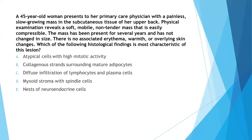Which of the following histological findings is most characteristic of this lesion? A 45-year-old woman presents to her family care physician with a painless slow-growing mass in the subcutaneous tissue of her upper back. Physical examination reveals a soft, mobile, non-tender mass that is easily compressible. The mass has been present for several years and has not changed in size. There is no associated erythema, warmth, or overlying skin changes. Options: atypical cells with high mitotic activity; collagenous strands surrounding mature adipocytes; diffuse infiltration of lymphocytes and plasma cells; myxoid stroma with spindle cells; or nests of neuroendocrine cells.